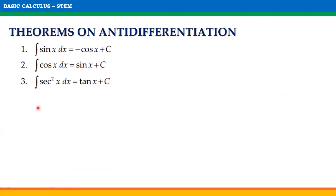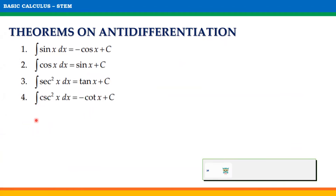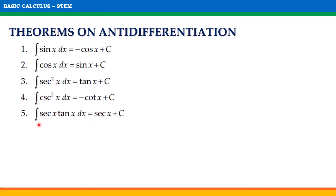For the third one, the indefinite integral of secant squared x with respect to x is equal to tangent x plus C. For the fourth one, the indefinite integral of cosecant squared x with respect to x is equal to negative cotangent x plus C. For the fifth one, the indefinite integral of secant x times tangent x with respect to x is equal to secant x plus C.